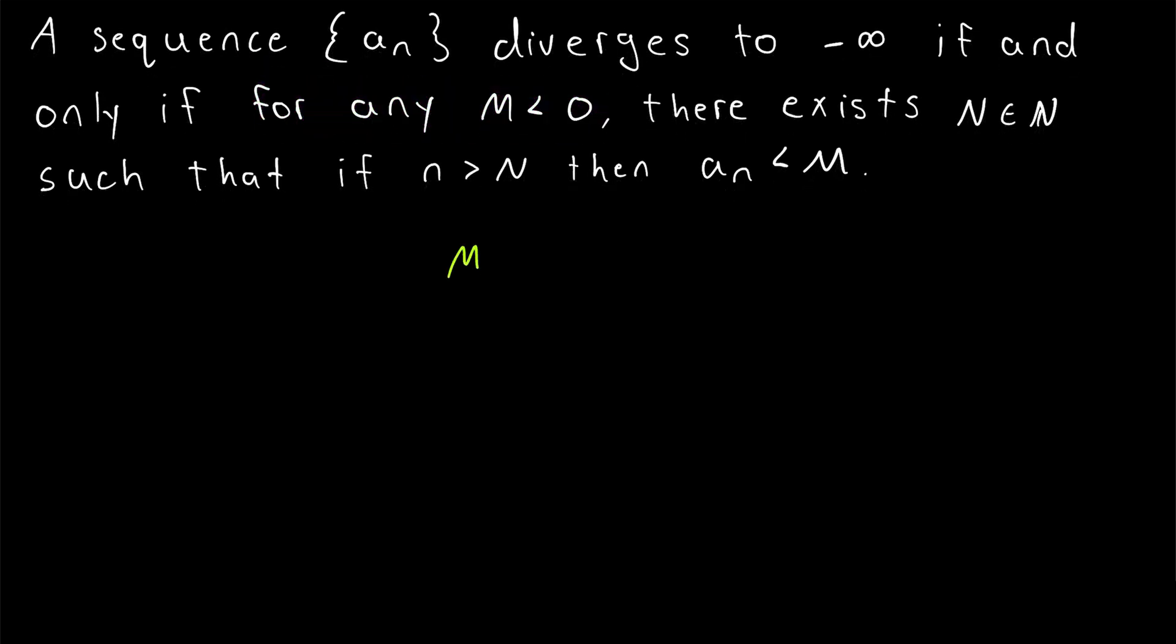In our previous example, we just looked at a specific M value of 100. So to finish the lesson off, let's prove that our sequence n over 2 diverges to infinity by showing we can satisfy this inequality for a generic M value.